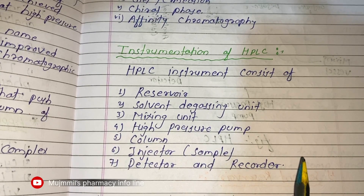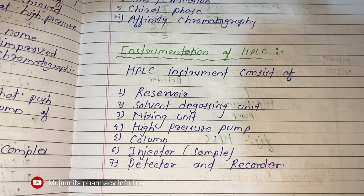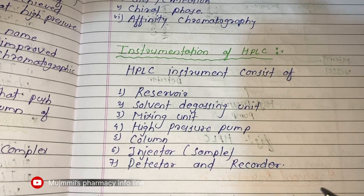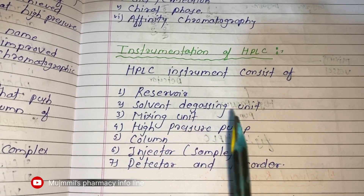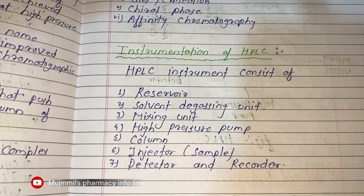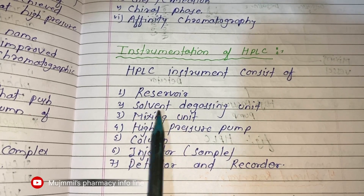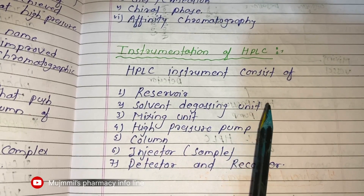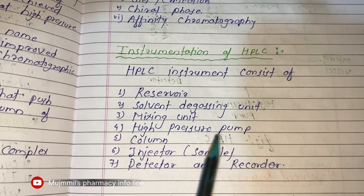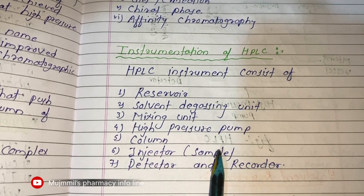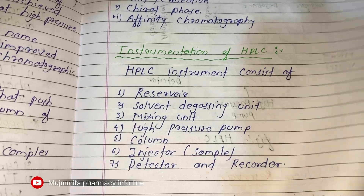Let's see the instrumentation of HPLC. Before describing the instrumentation in an exam, you should enlist all the parts of HPLC to get better marks. A normal HPLC system consists of: a solvent reservoir, a solvent degassing unit, a mixing unit, a high pressure pump, columns, a sample injector (sample inlet), detectors, and recorders.